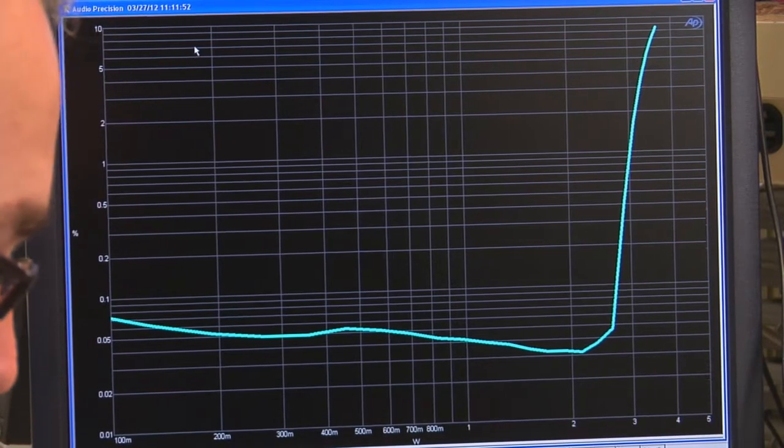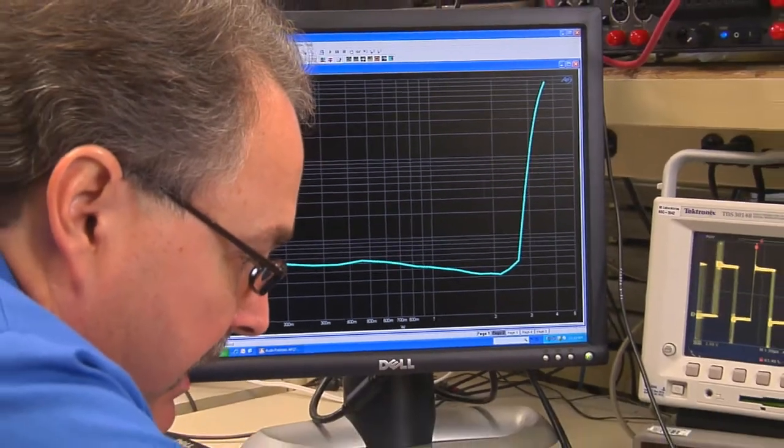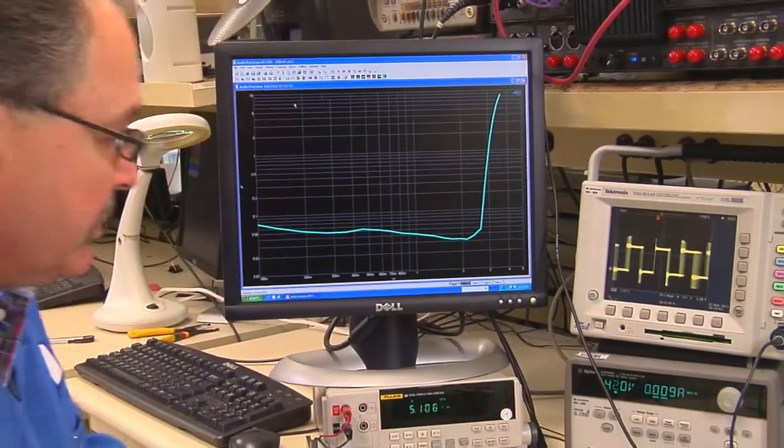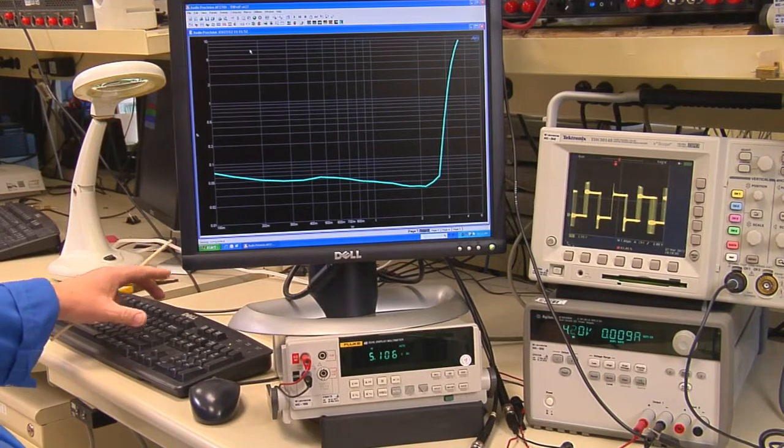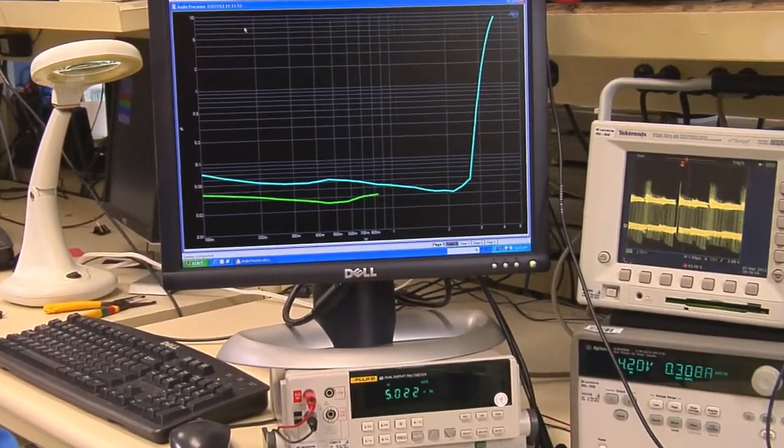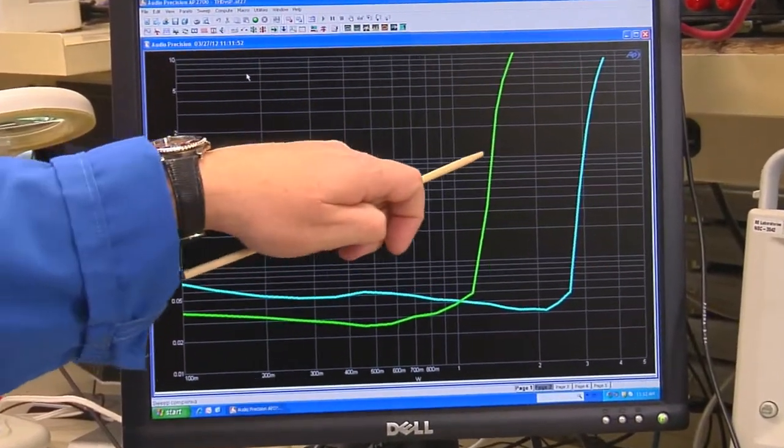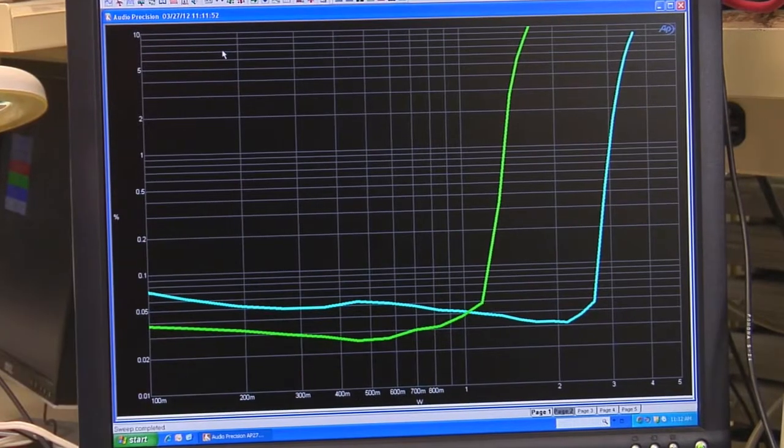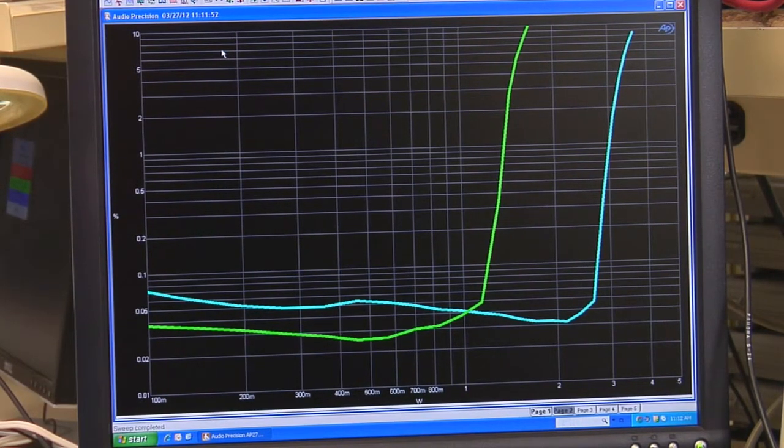Now if I lower the Feedback Select and bring it down to a lower boost voltage here and run a sweep, you will see that I get much lower power at 1% distortion. I get 1.5 watts versus the 3 watts. Those are the two output or feedback configurations that are offered on this part.